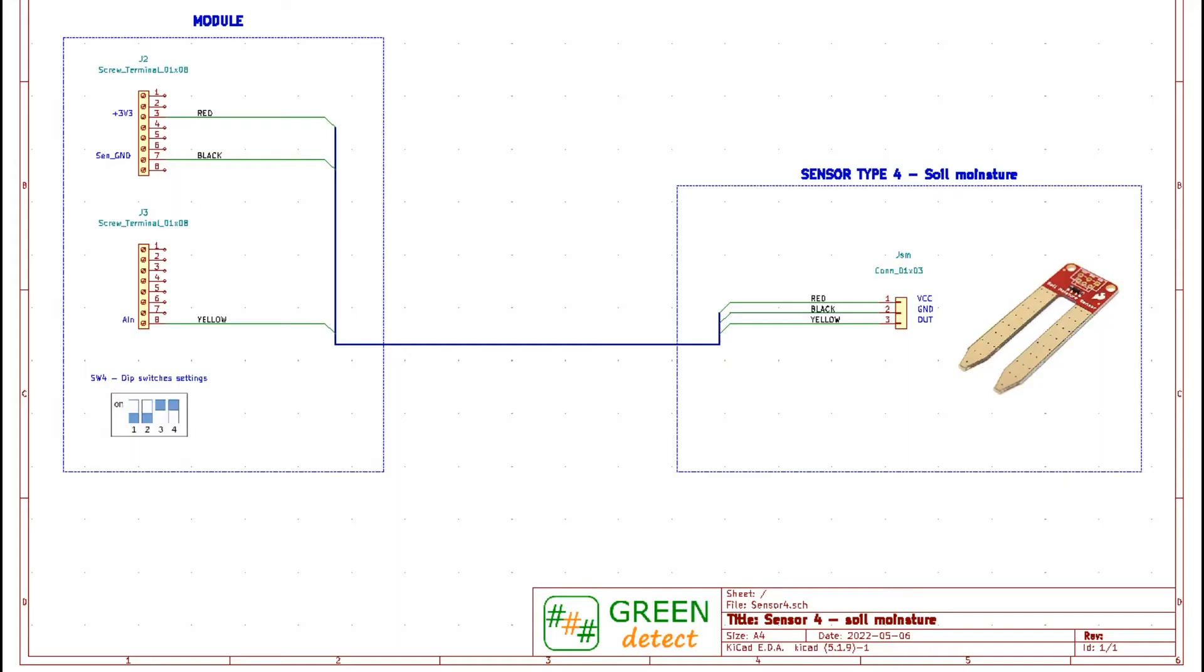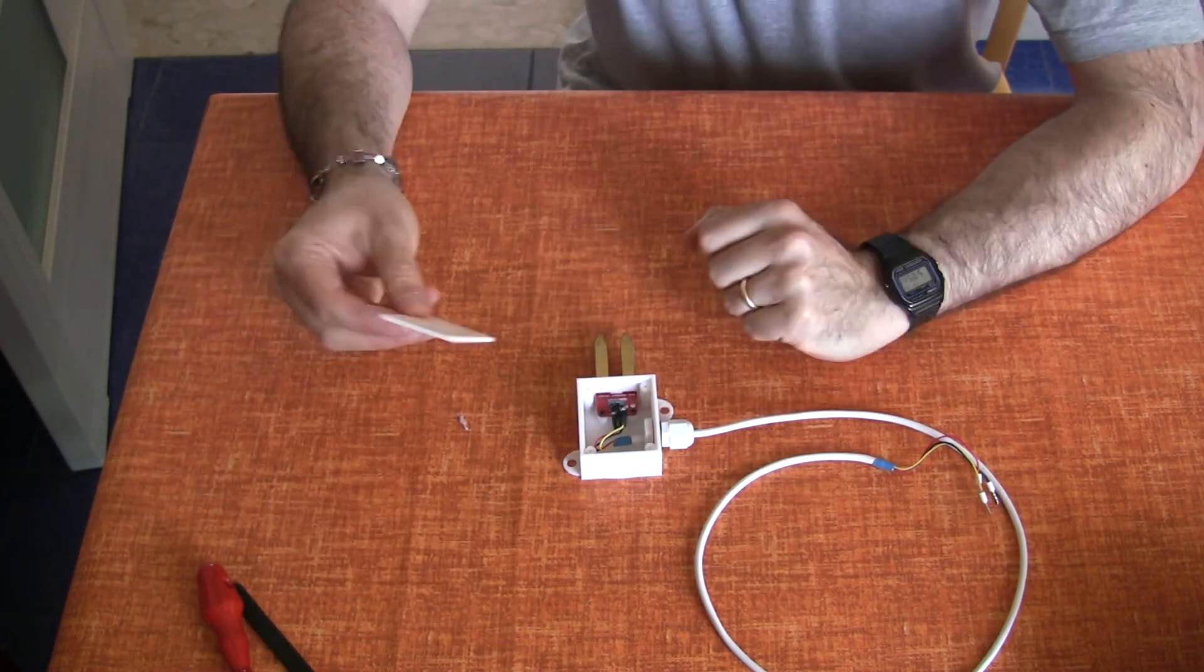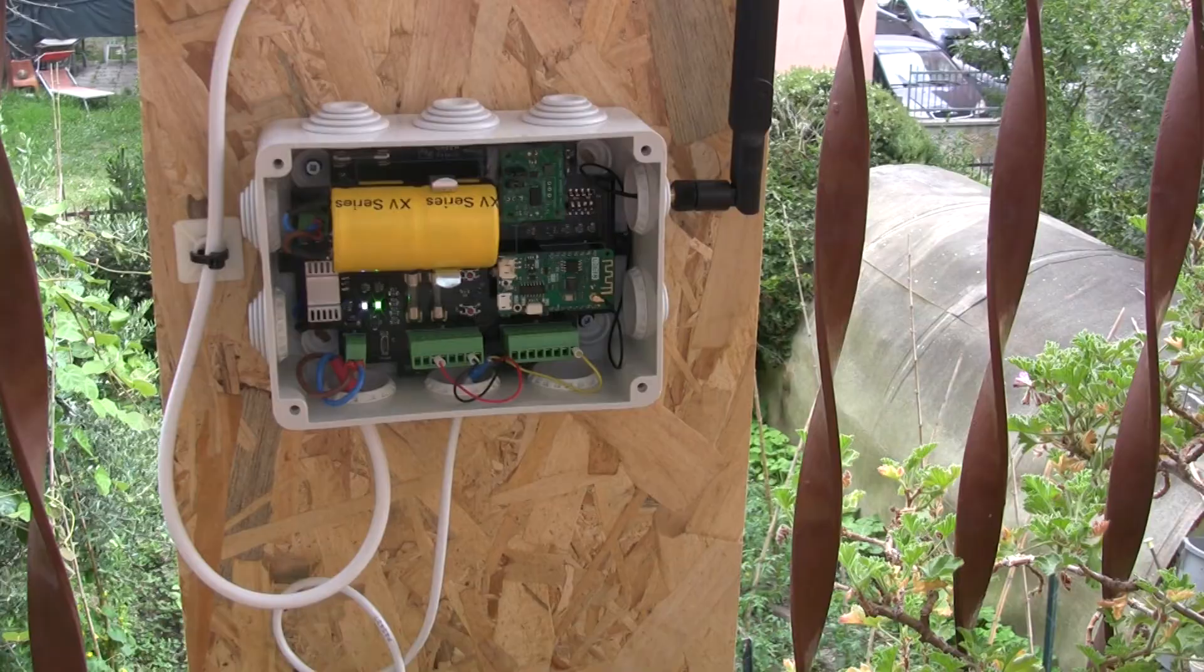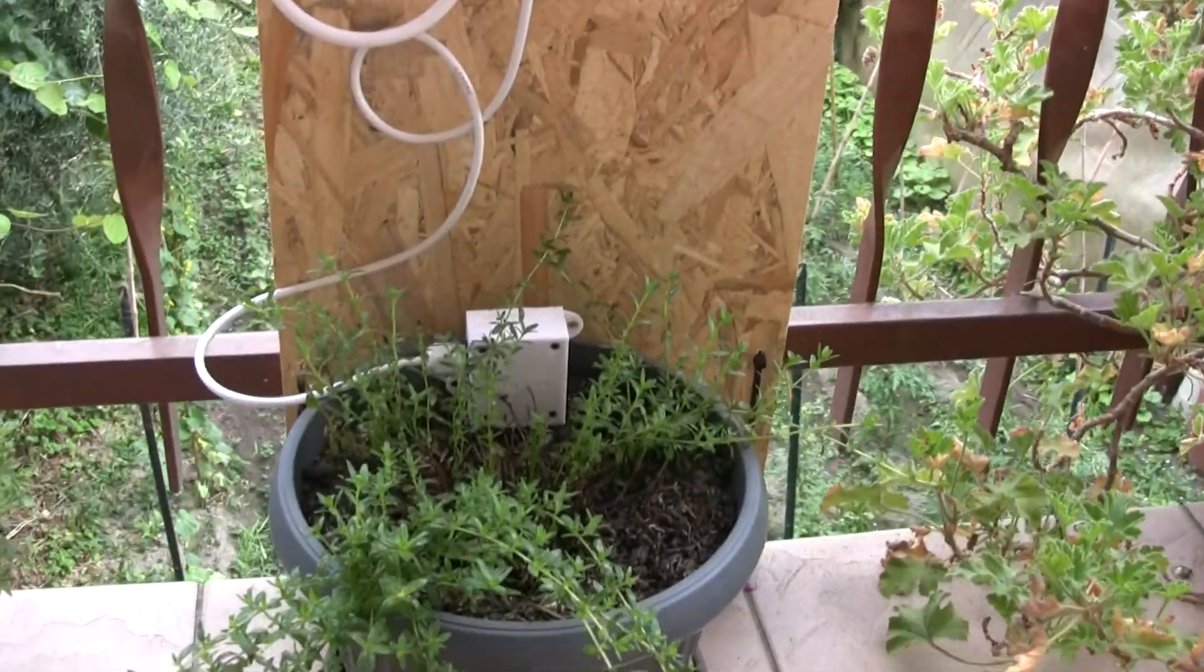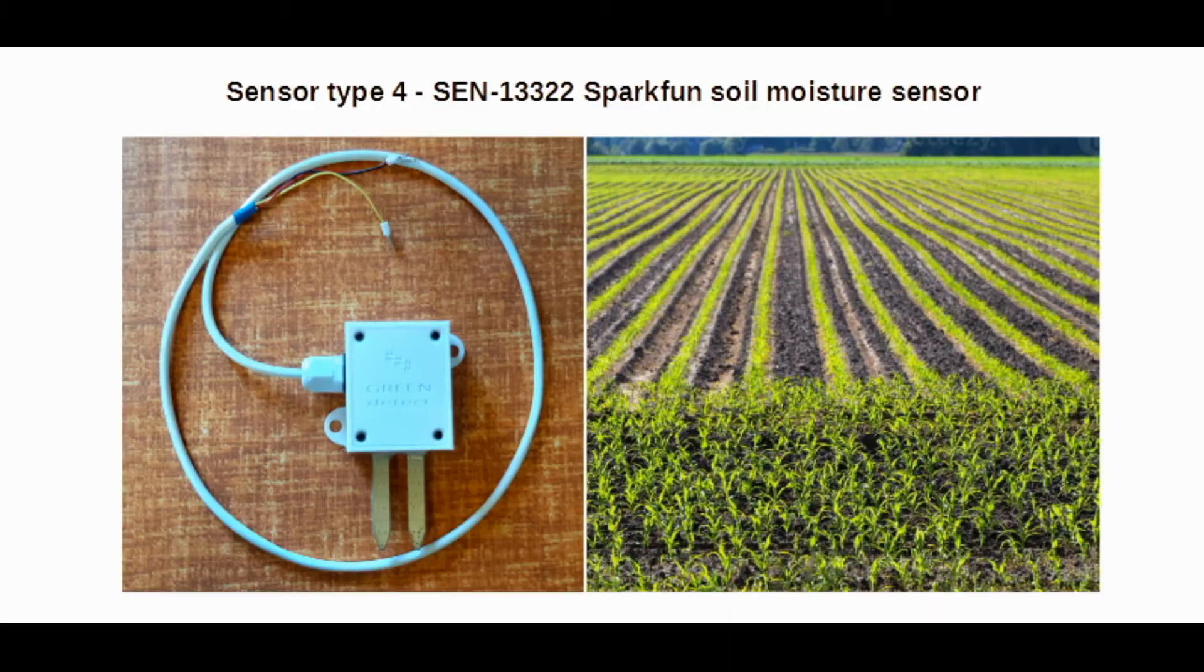Sensor type 4: SparkFun soil moisture sensor to measure the soil humidity. This sensor is very useful in the agricultural sector.